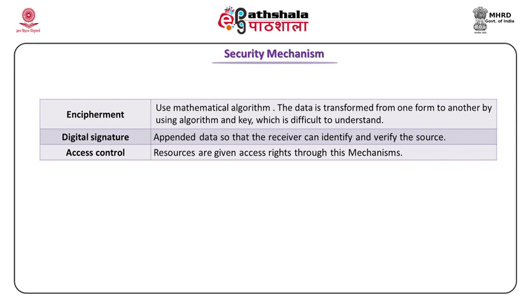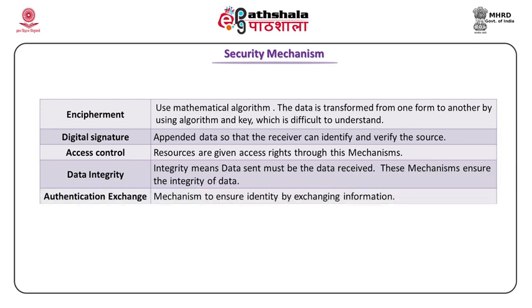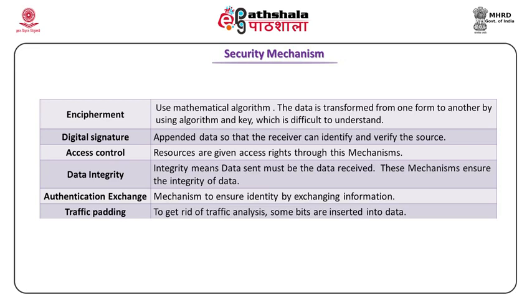Access control: resources are given access rights through this mechanism. In a Unix system, every object has read, write, and execute permissions — with those permissions, a user can only read, write, or modify. Data integrity means data received is the same as it was sent. Authentication exchange: if two parties want to communicate, they exchange information with their identity so B can identify it is talking to A and vice versa. Traffic padding: if random bits are appended to traffic, the one who intercepts the data cannot analyze it — so traffic padding is appending random data to information.